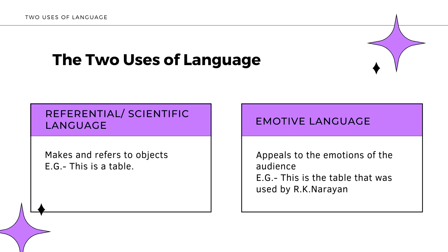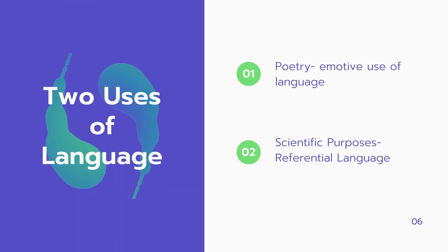For example, when I say 'this is a table,' it merely presents before the listeners the image of a table. On the other hand, when I say 'this table was used by R.K. Narayan,' this evokes a sense of awe in the listeners, and probably even a sense of respect in those who know about the greatness of R.K. Narayan. This is called the emotive use of language.